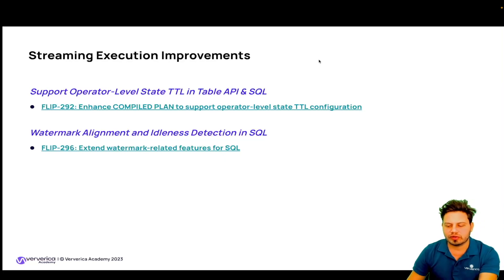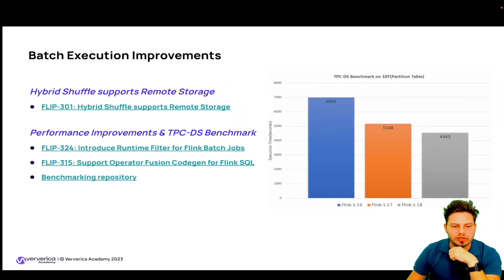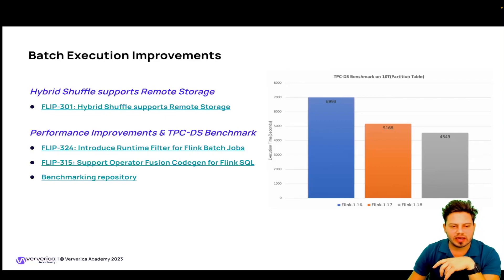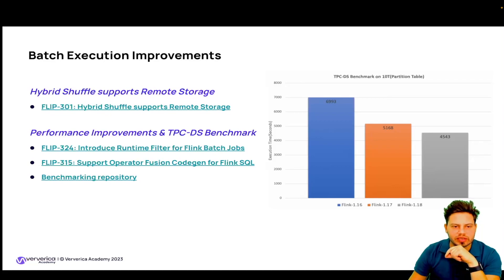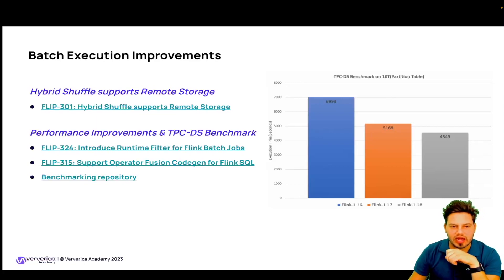Moving to batch execution improvements: first, we have the hybrid shuffle support for remote storage, introduced with FLIP-310. The hybrid shuffle stores shuffle data in remote storage and you can configure a path. The hybrid shuffle uses less network memory than before by decoupling the memory usage from the number of parallelisms, improving overall stability and ease of use.